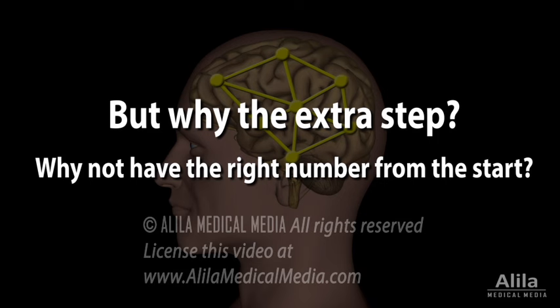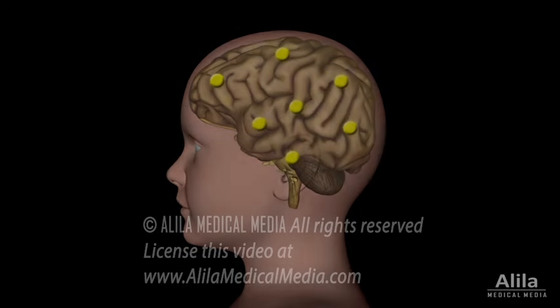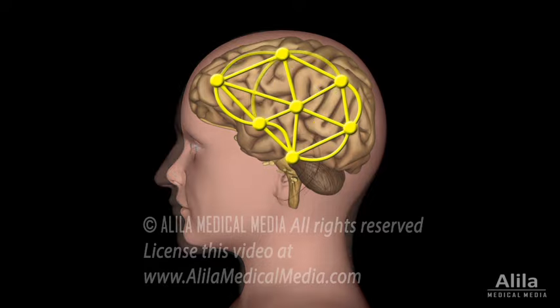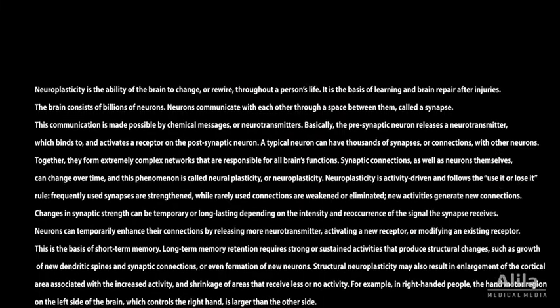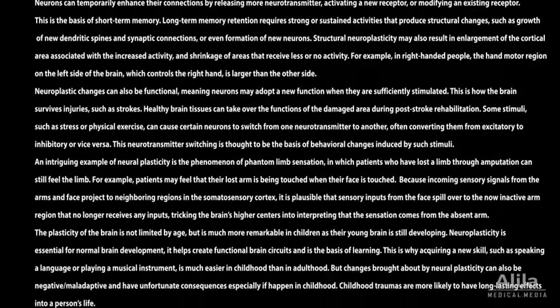Computational models suggest that learning performance is optimal when synaptic connections are first overgenerated and then pruned. An analogy is the task of writing an essay. The easiest way is to put all possible ideas into a longer-than-needed first draft, then trim it to keep only the essential points to create an effective final message.